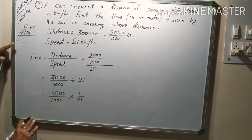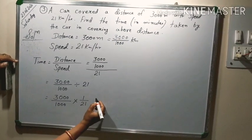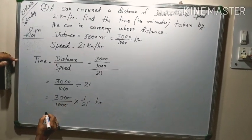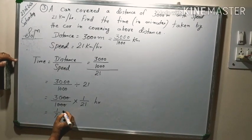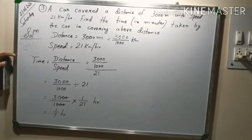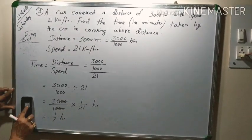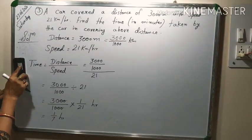Now as speed was in kilometer per hour, so time will be coming here in hour. So we are getting 1 by 7 hour. Answer we have to give in minutes. This hour is to be changed into minute.